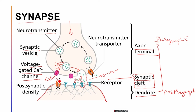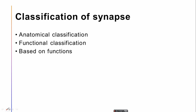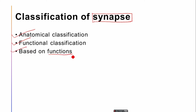The sodium outside moves in and the potassium inside moves out, and this whole mechanism carries on through the entire neurolema of the neuron. This is the simplest way of conducting the synapse in the body. Now we are going to talk about the different classifications of the synapse — number one is the anatomical classification, number two is the functional classification, and number three is based on the functions of actions.